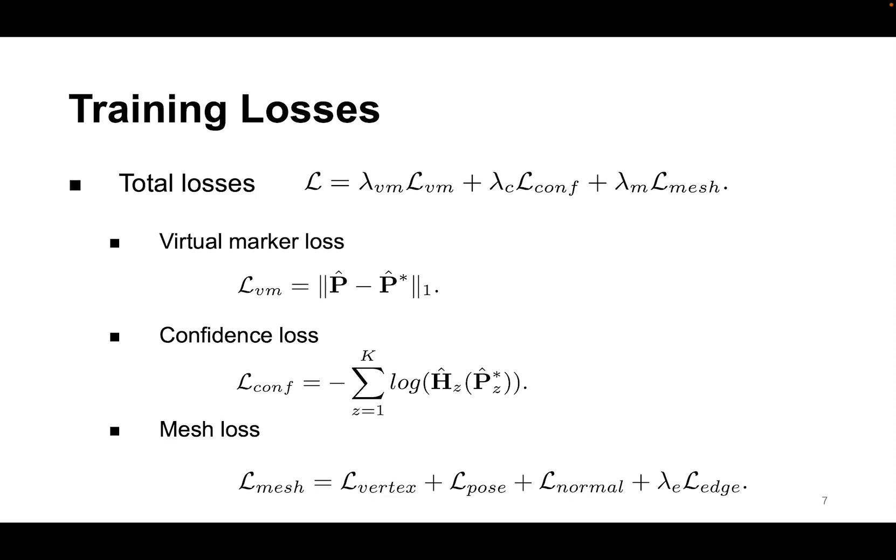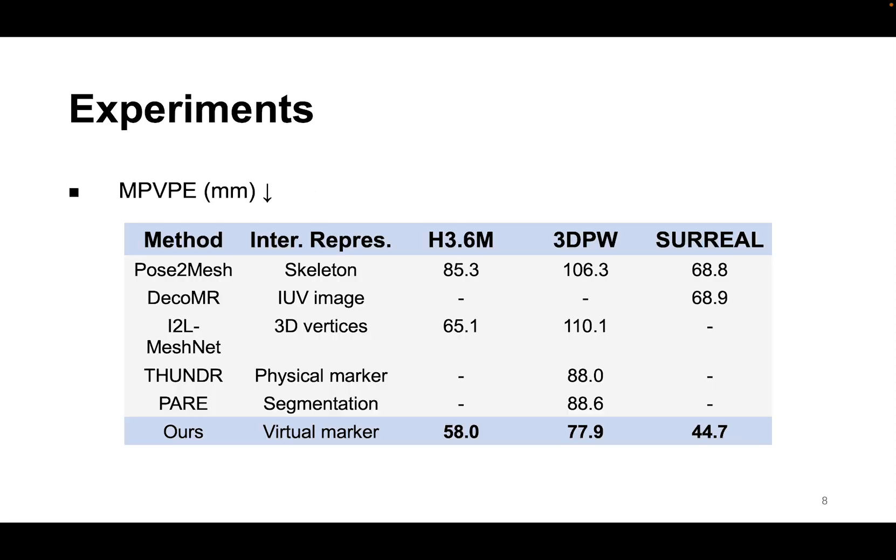We adopt several loss terms to supervise the 3D estimated meshes with additional smoothness terms following previous works. Our approach outperforms the state-of-the-art methods on three datasets. In particular, it surpasses the existing methods by a notable margin on the SURREAL dataset, which has diverse body shapes. Please refer to the paper for more ablation studies.